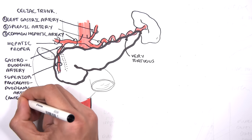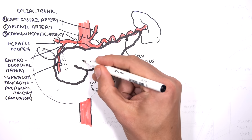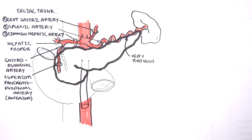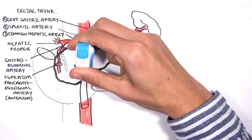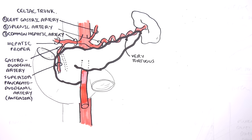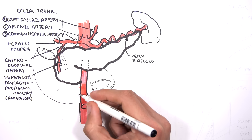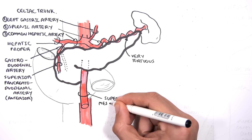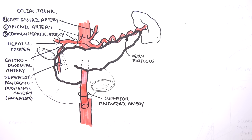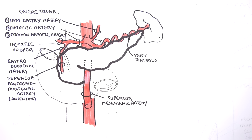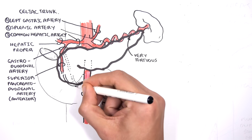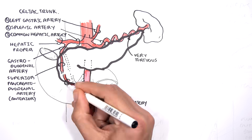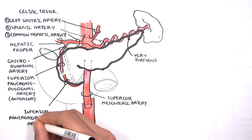The gastroduodenal artery branches into the superior pancreaticoduodenal artery, which has anterior and posterior parts. The inferior pancreaticoduodenal artery comes from the superior mesenteric artery, originating at approximately L1–L2, and also has anterior and posterior portions.